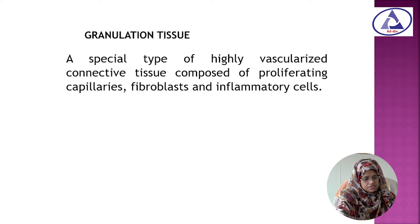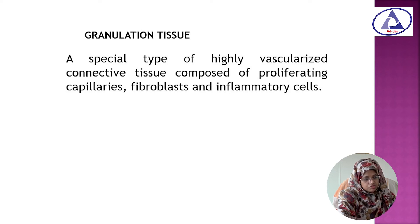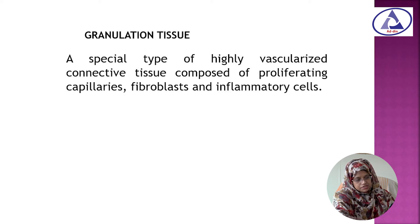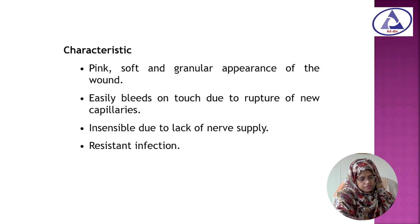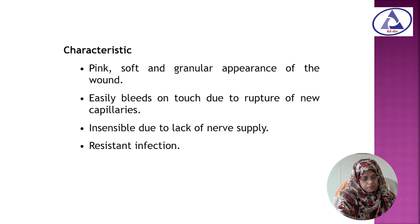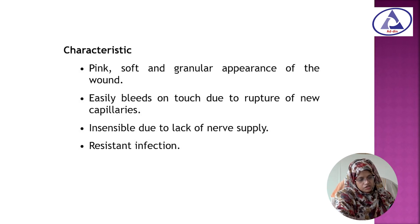Now, coming to our next topic: granulation tissue. What is granulation tissue? It is a special type of highly vascularized connective tissue, which is composed of proliferating capillaries, fibroblasts, and inflammatory cells. Granulation tissue is pink, soft, and granular in appearance. It bleeds easily on touch due to rupture of new capillaries, and it is insensible due to lack of nerve supply, and resistant to infection.